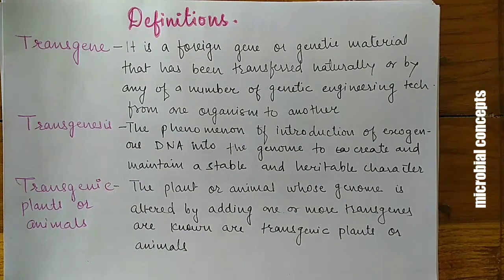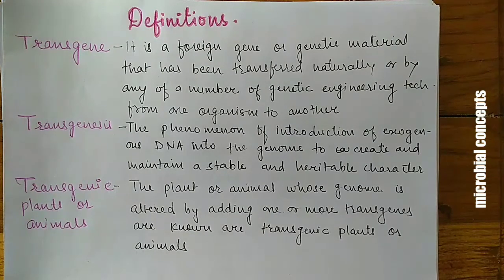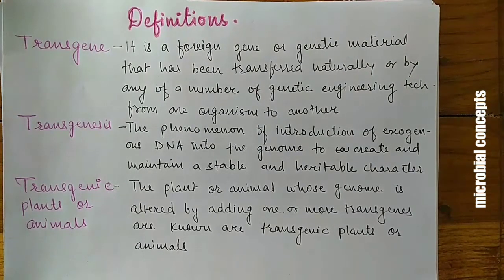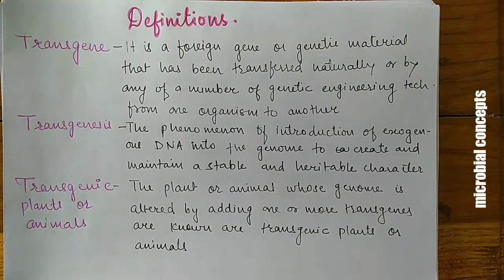The first term we will learn is transgene. A transgene is a foreign gene or genetic material that has been transferred naturally or by any of a number of genetic engineering techniques from one organism to another. It is the gene used to develop a modified version of an organism, transferred from one organism to another.